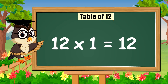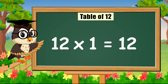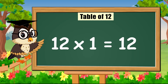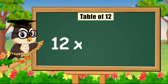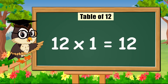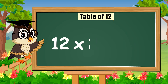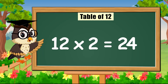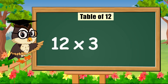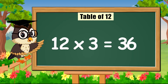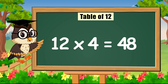Hello everyone, we are gonna learn today. Sing with me the table of twelve. Come on! Twelve times one is twelve. Twelve times two is twenty-four. Twelve times three is thirty-six. Twelve times four is forty-eight.